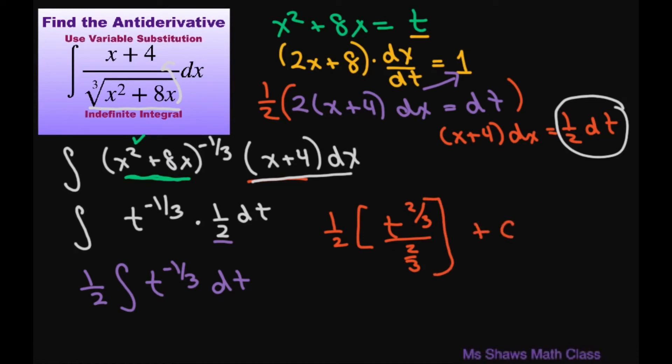So we move this 3 up there, and you're going to get just multiplied by three-halves. That's going to be three-fourths t to the power of two-thirds plus c, your unknown constant.